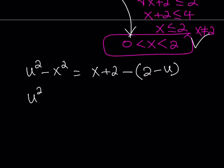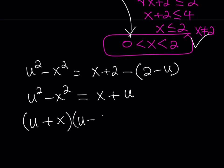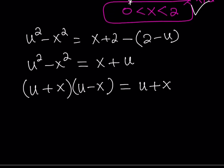Simplifying: the 2 cancels and we get x plus u on the left. The left-hand side u² minus x² is factorable as (u plus x)(u minus x) — a difference of two squares. On the right we have u plus x. Now, don't be tempted to cancel out u plus x — dividing by something containing variables loses solutions. So the safe route is to put everything on the same side and factor.